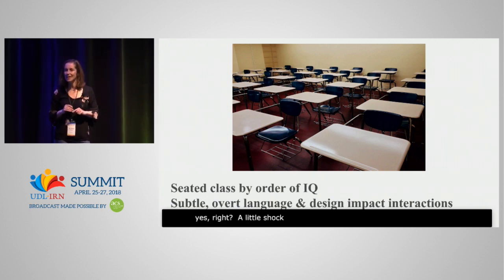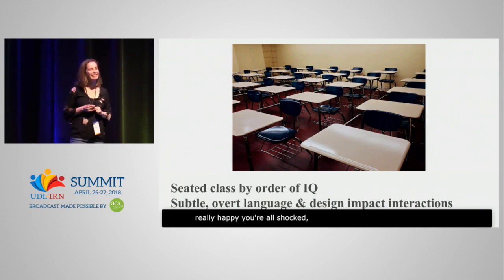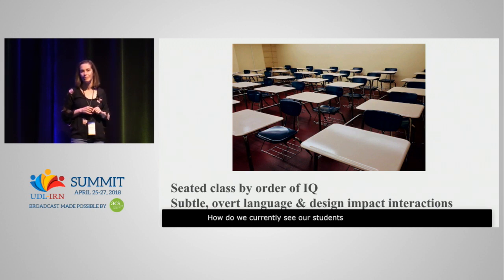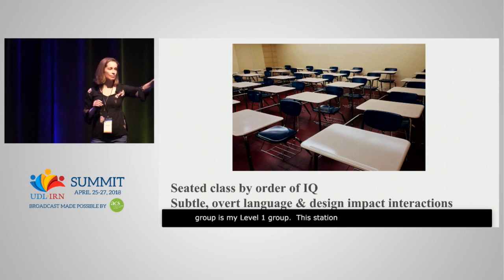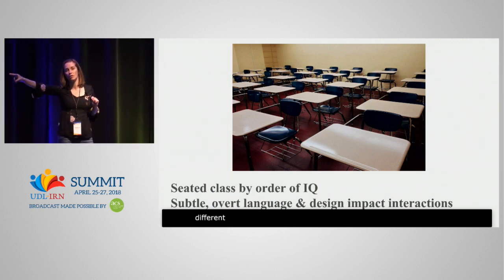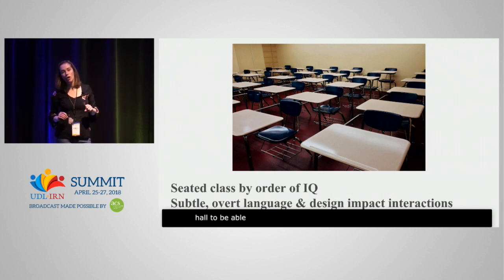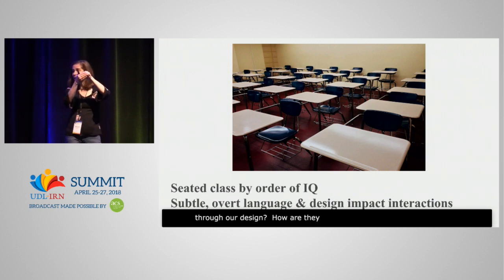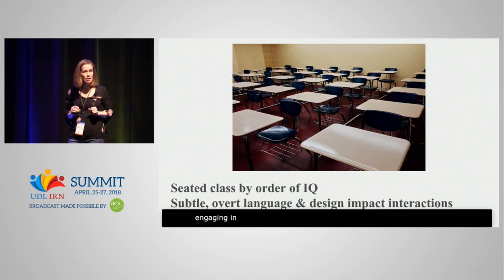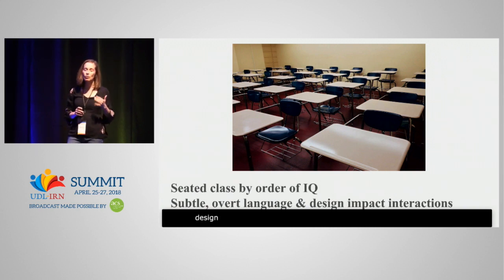A little shocking, right? I'm going to challenge you: how do we currently seat our students in our classes right now? I so frequently hear, 'Oh, this group is my level one group. This station is my gifted station — they're going to do something different. These students are going to go down the hall to be able to access that.' How are we still seating and grouping and labeling our learners? And what are those expectations that we're giving them through our design? How are they perceiving them? How are they interacting with them? How are they engaging in those moments? Because this subtle — but I have to say it's often very overt — language and design matters and makes an incredible difference.